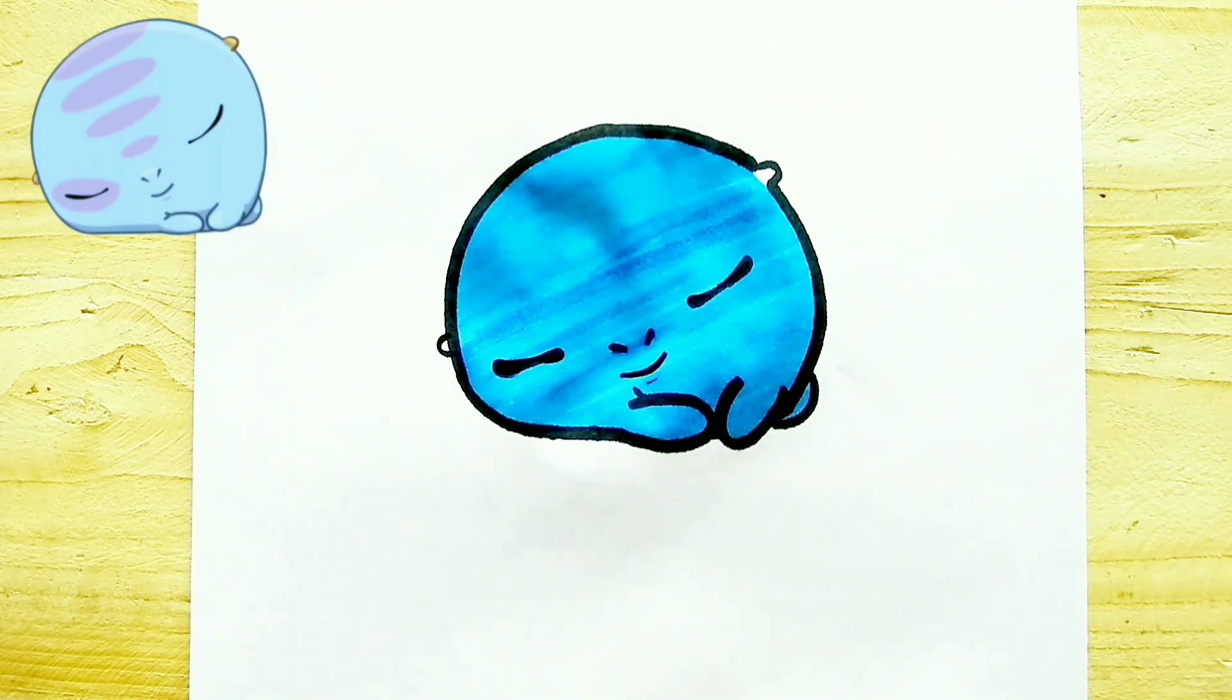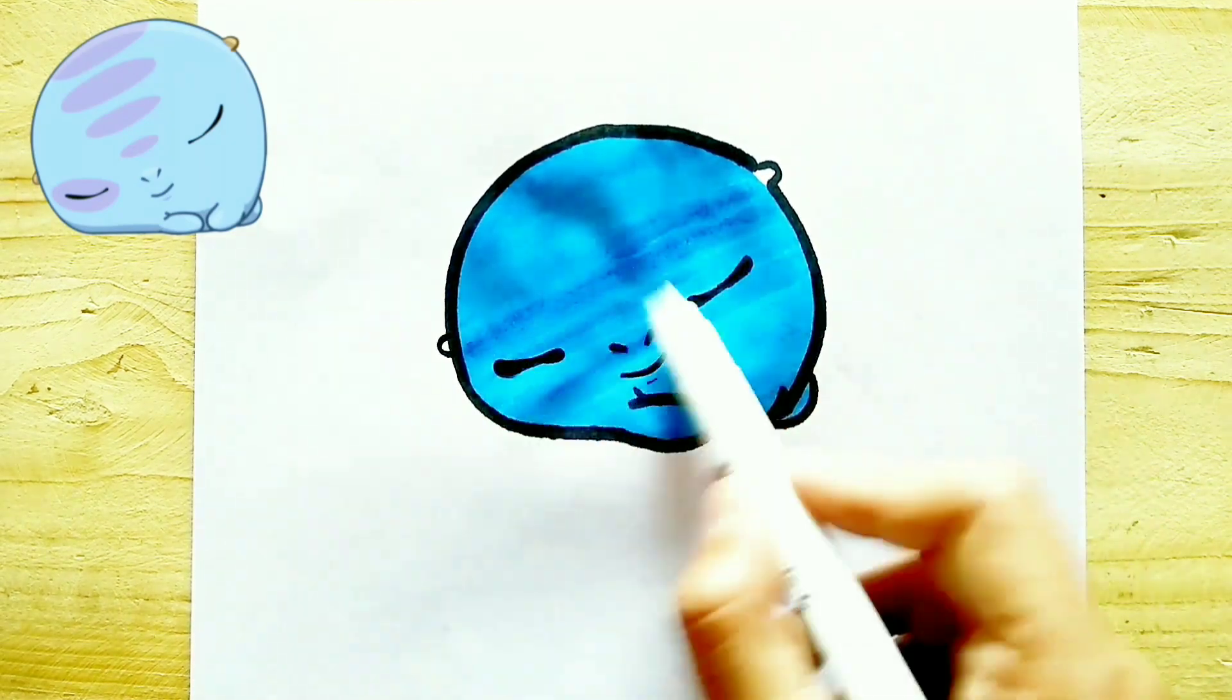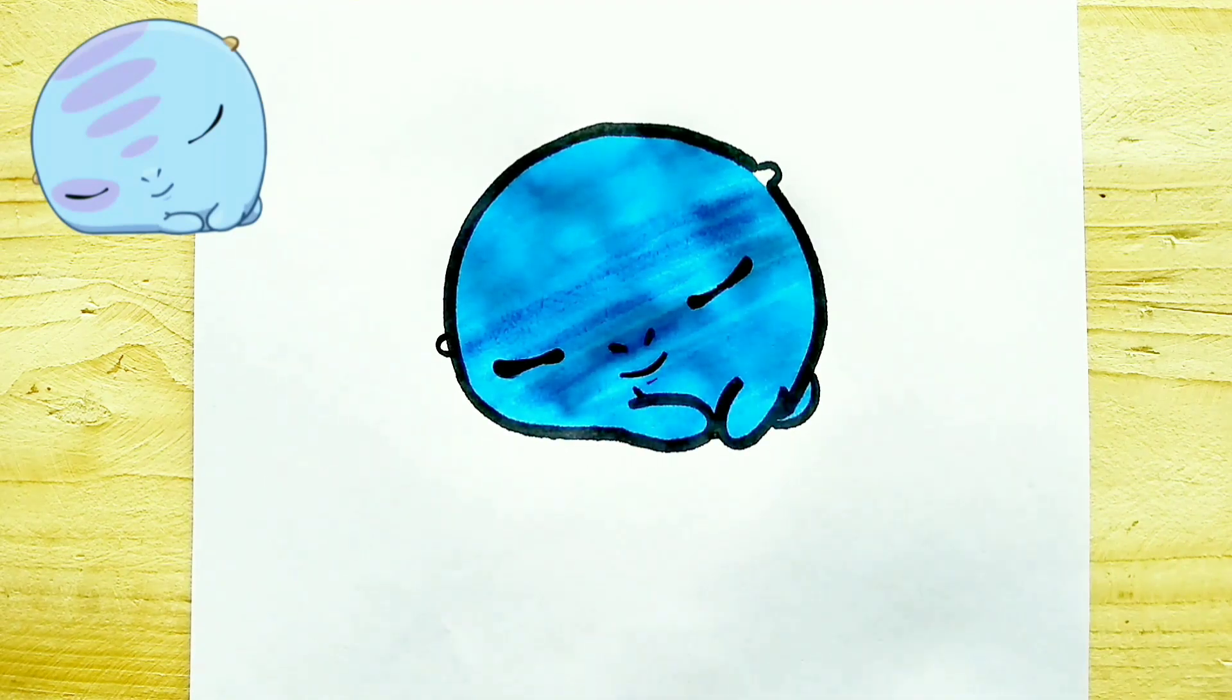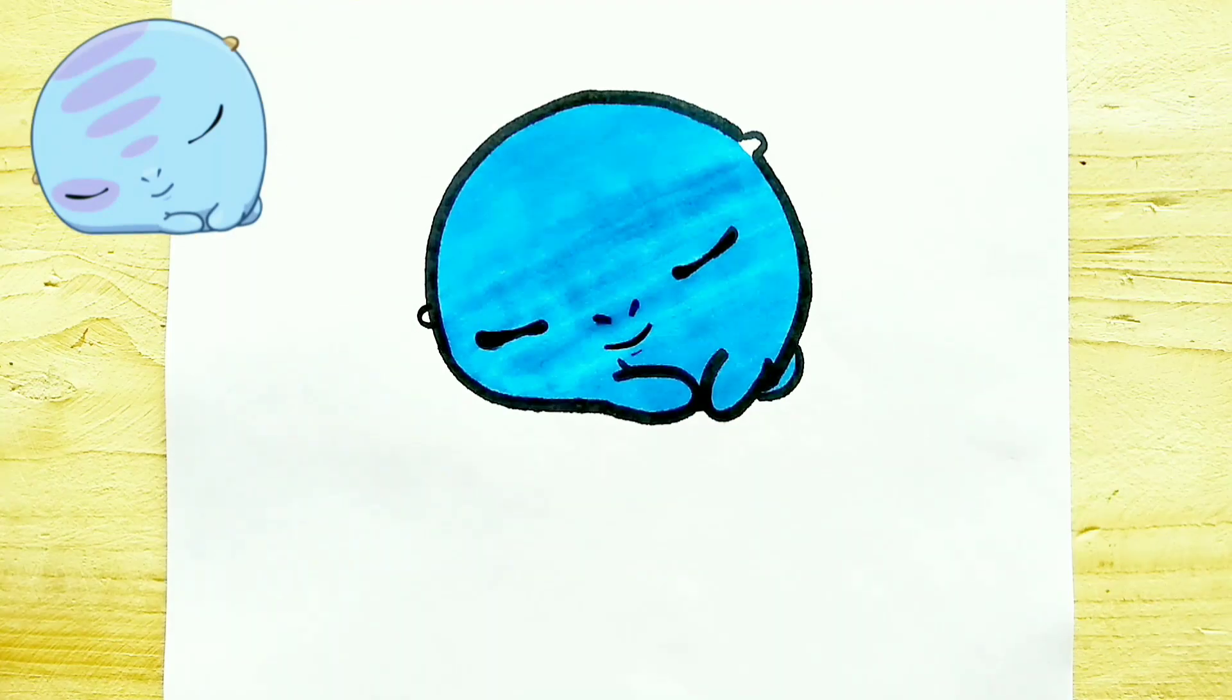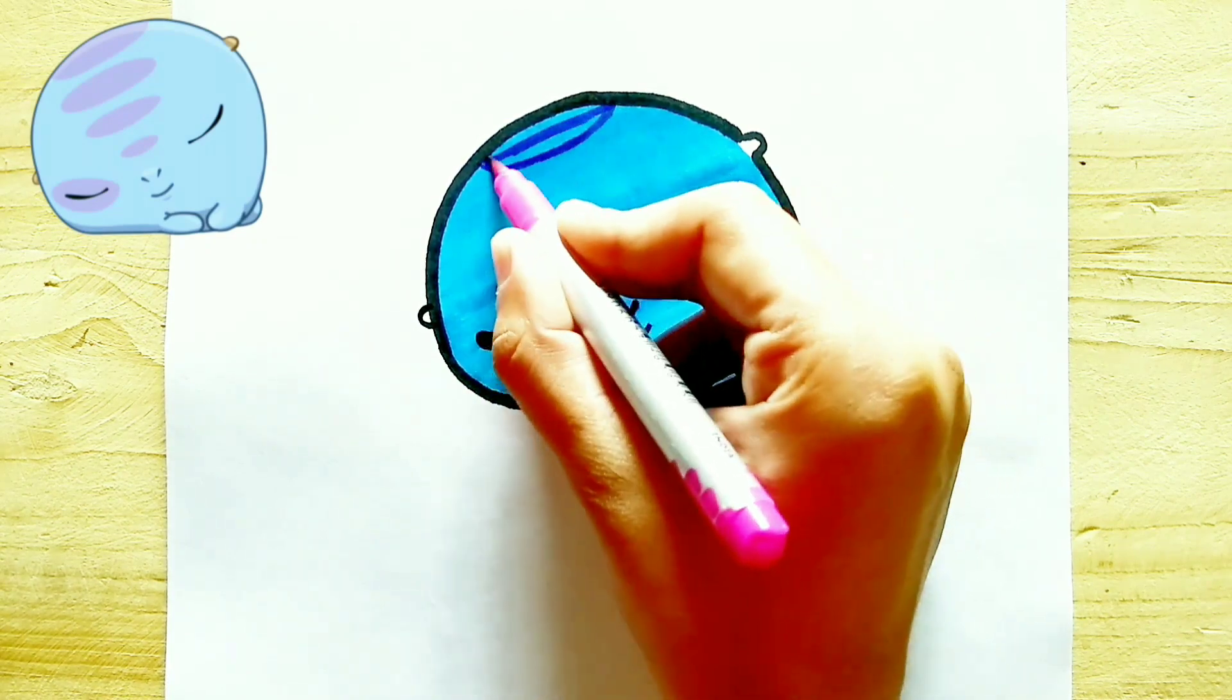To merge this blue color, I use the transparent white brush pen. It will merge all the blue color. After it dries, I make the patches of his head.